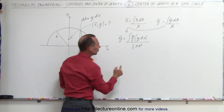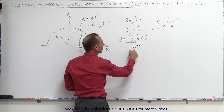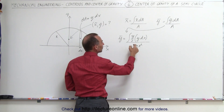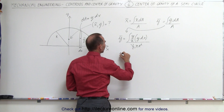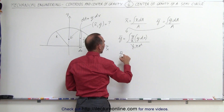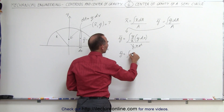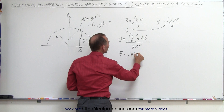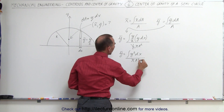Notice that we can factor out a one-half in the numerator, and we have a one-half in the denominator — they'll cancel out. So now we have the y-coordinate of the center of gravity is equal to the integral of y squared times dx, divided by pi r squared.